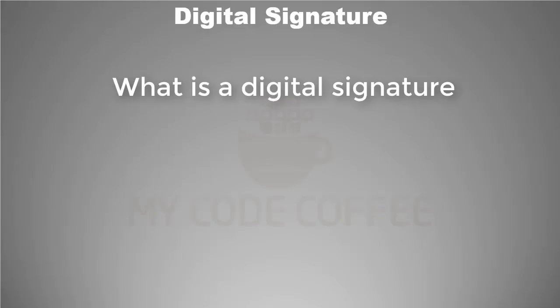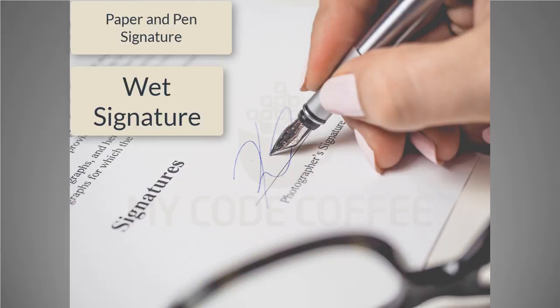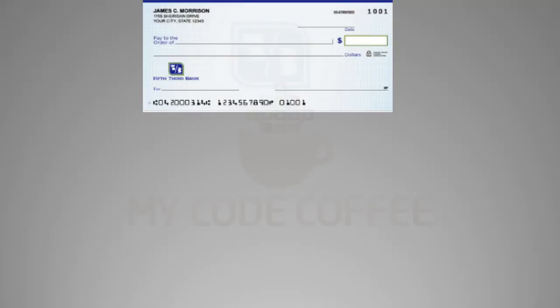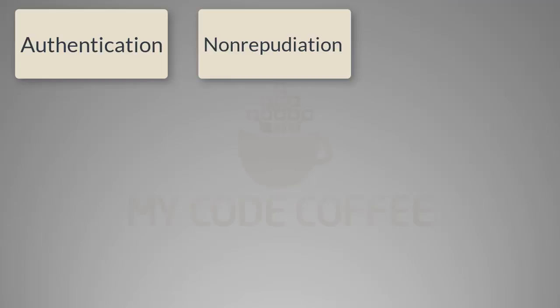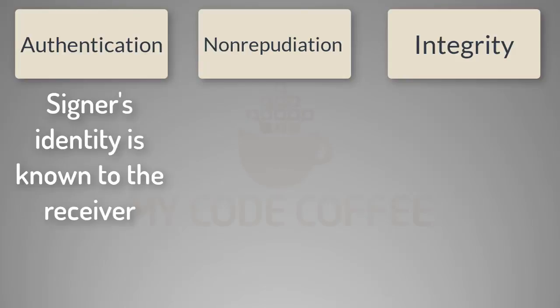To understand digital signature, let us first talk about our familiar paper and pen signature, also called wet signature. We use this signature to sign various types of messages — it can be a will, a property document, a contract, or any other type of statement. Let us take an example of a bank check. When you sign a check to transfer some funds from your bank account to someone else's account, that means three things: authentication, non-repudiation, and integrity.